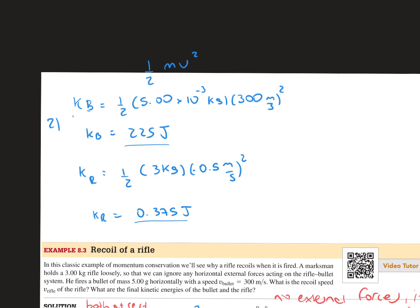To find the final kinetic energies, we will use the equation kinetic energy being equal to 1/2 times mass times velocity squared. For the bullet, we have 1/2 times 5 times 10 to the negative third times the velocity of 300 meters per second. That should give us around 225 joules.